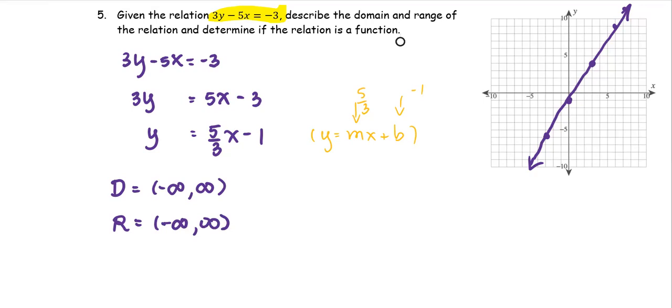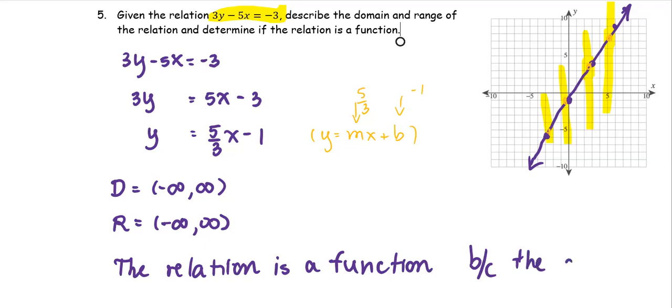And next, we determine whether this relation is a function or not using the vertical line test. Any vertical lines that we use for this test has only one intersection point. We can say that this relation is a function because the graph passes the vertical line test.